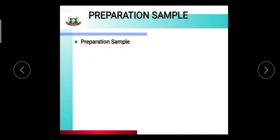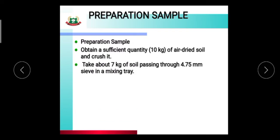Preparation sample: obtain a sufficient quantity, 10 kg of air dried soil and crush it. Take about 7 kg of soil passing through 4.75 mm sieve in a mixing tray.